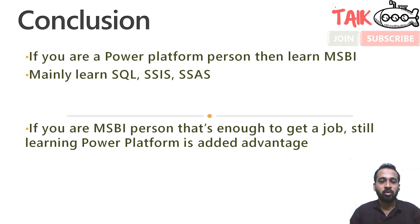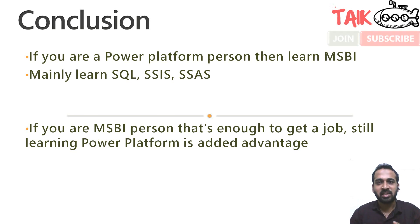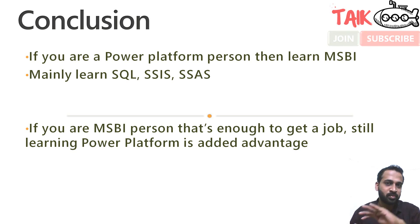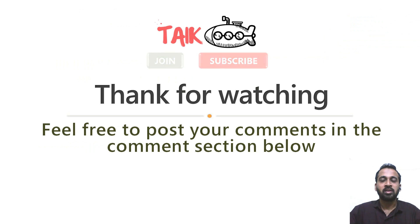So what's the conclusion? If you are a Power Platform person, then learn MSBI — mainly SQL Server, SSIS, and SSAS. For SSRS and Paginated Reports, most companies are not using it right now, but it may be required in future. As of now, if you are going to land a job, it is good to learn SQL, SSIS, and SSAS. If you are already an MSBI person, that's enough to get a job because there is a great demand — most companies are seeking people with MSBI knowledge. Still, learning Power Platform is an added advantage. So you need to learn both MSBI and Power Platform in order to get a good job in the current market.